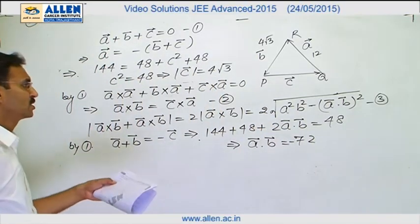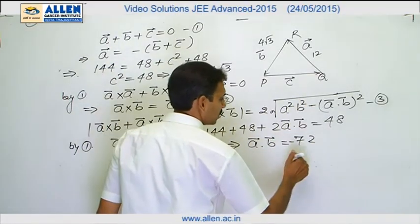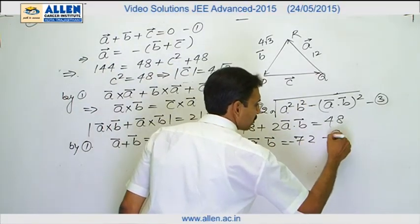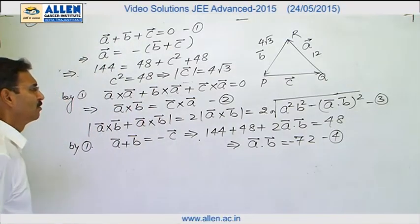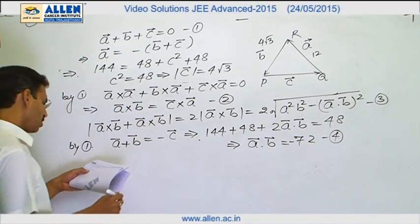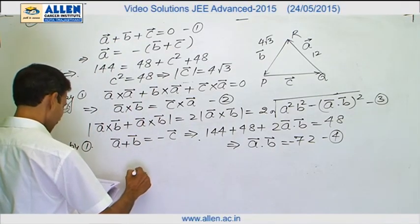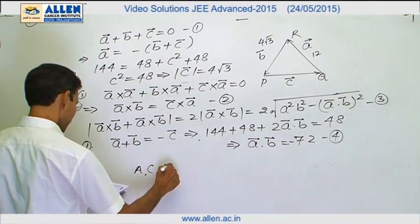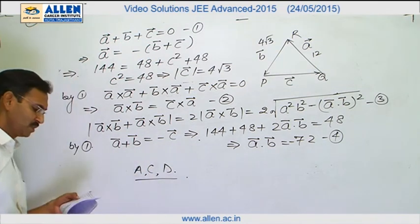It means option d is correct. And when we will use this in option, when we will use this information 4 in 3, we will come to know that this option c is also correct. And this way we will have three correct options a, c and d. B option is wrong.